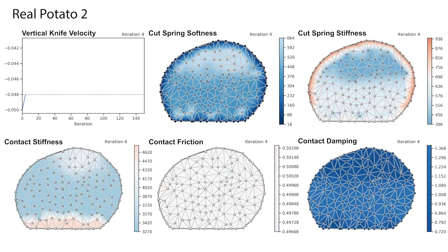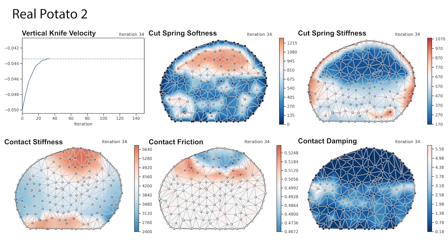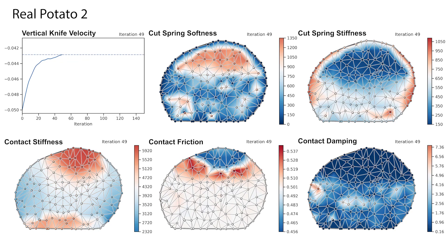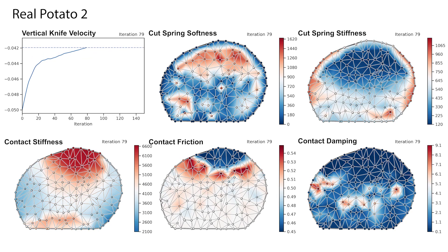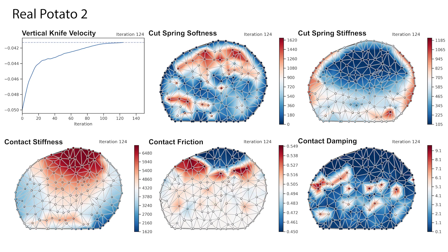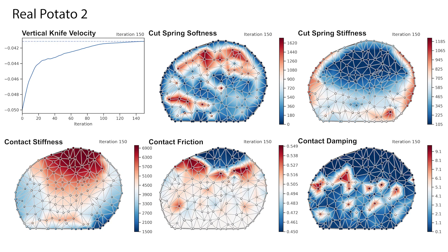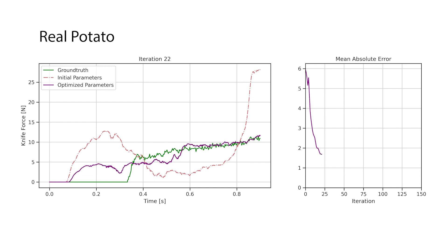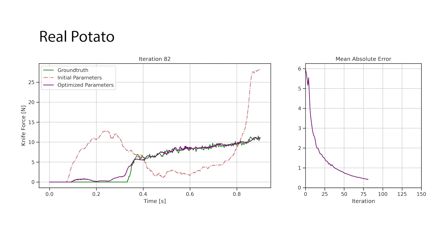In the following, we show the evolution of the simulation parameters corresponding to each cutting spring, while minimizing the error in the predicted knife force profile between our simulator and real-world measurements from a robot cutting an actual potato. Within 150 gradient evaluations, our simulator closely predicts the knife force profile.